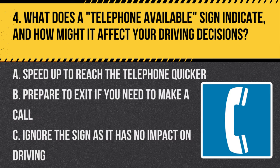Question 4. What does a telephone available sign indicate and how might it affect your driving decisions? A. Speed up to reach the telephone quicker. B. Prepare to exit if you need to make a call. C. Ignore the sign as it has no impact on driving. Answer: B. Prepare to exit if you need to make a call. This sign indicates the availability of a telephone service ahead, useful for emergencies or important calls.